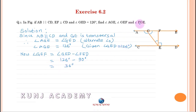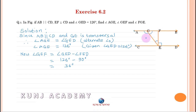To find angle FGE: in triangle EFG, the sum of three angles is equal to 180 degrees.